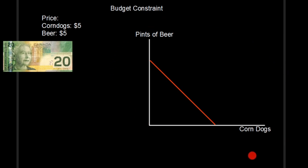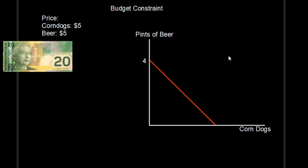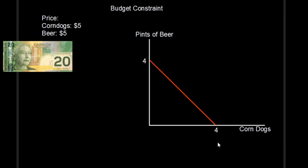We can view our possible choices graphically. We have our pints of beer on the vertical axis and corn dogs on the horizontal. With $20, if I were to just buy beer — zero corn dogs — I'd be able to have four pints. Similarly, if I only bought corn dogs, I could buy four. So we have each of our extremes at four, and the possible combinations in between: three and one, two and two, one and three.